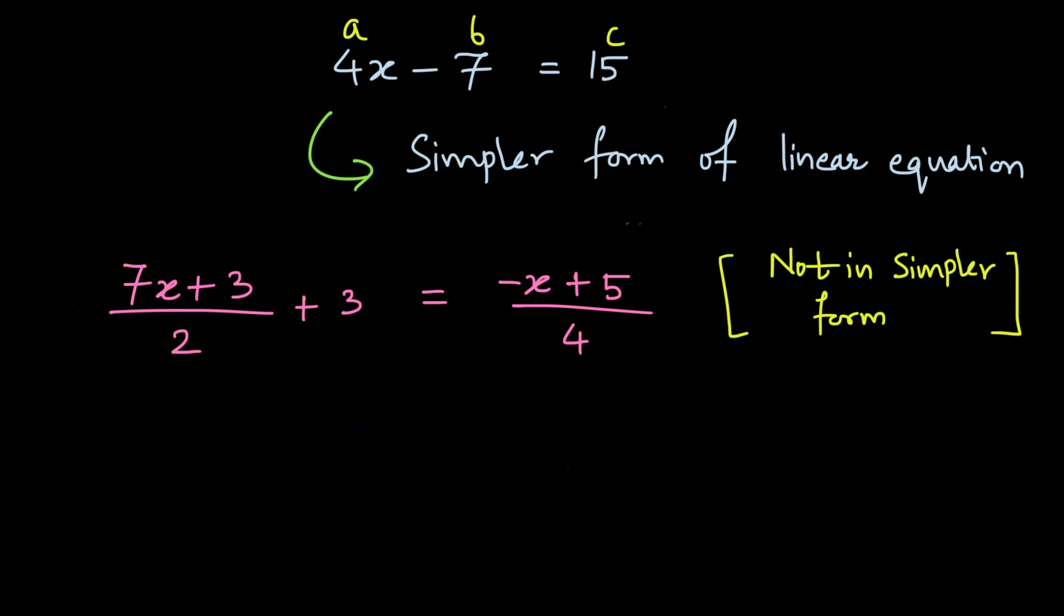In such cases what we can do is look at the denominators wherever they are appearing and find its LCM. When we look at the denominators it's 2 and 4 and the LCM of 2 and 4 is 4. Once you find the LCM, next step is to multiply both the sides of the equation by the LCM.